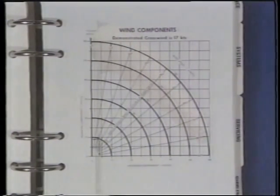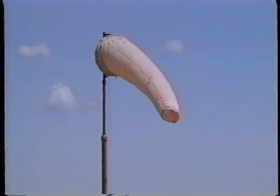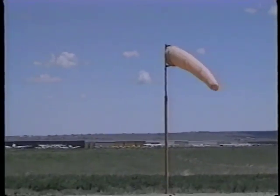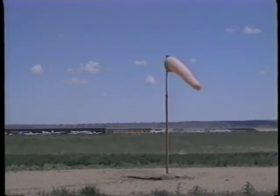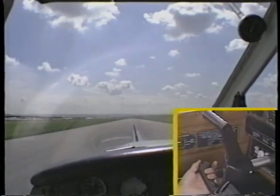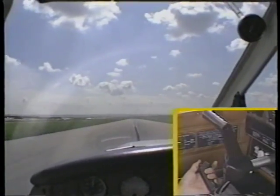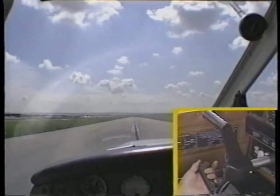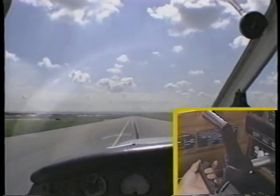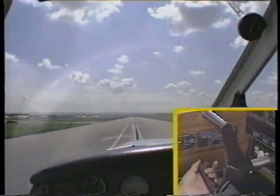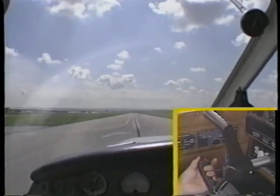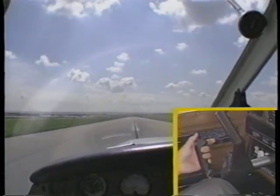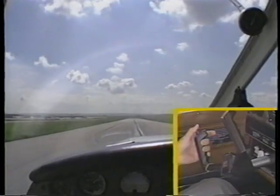Before beginning the takeoff roll, check the wind sock to determine the wind direction, and then position the ailerons into the wind. Full aileron deflection may be required at low speeds when control effectiveness is minimal. As speed increases and the ailerons become more effective, you may gradually reduce the amount of aileron deflection.